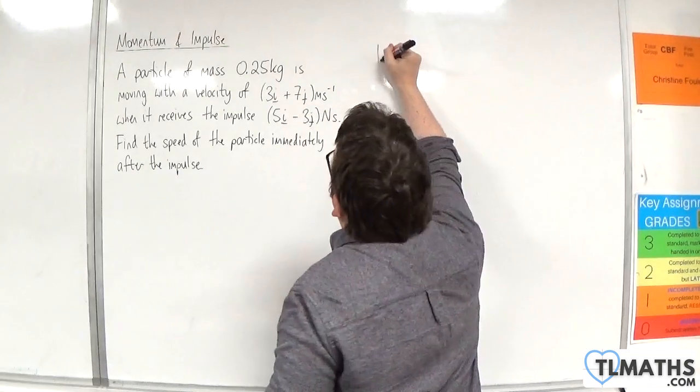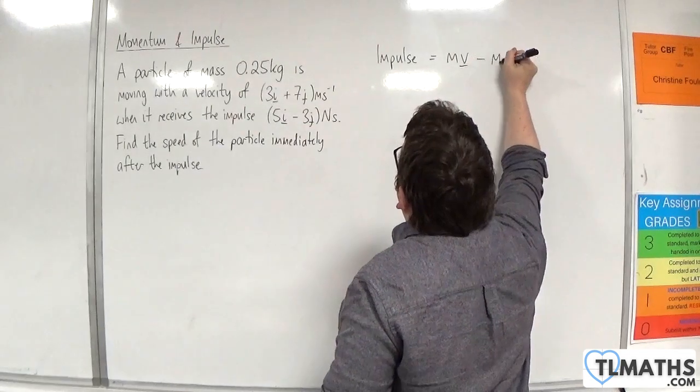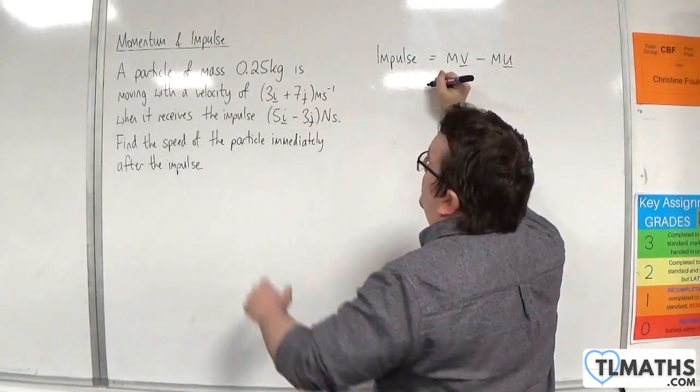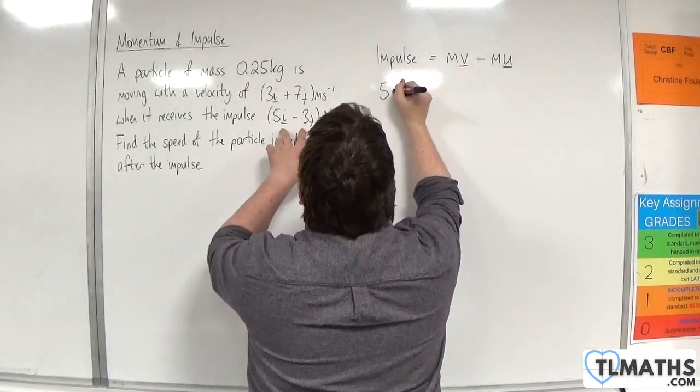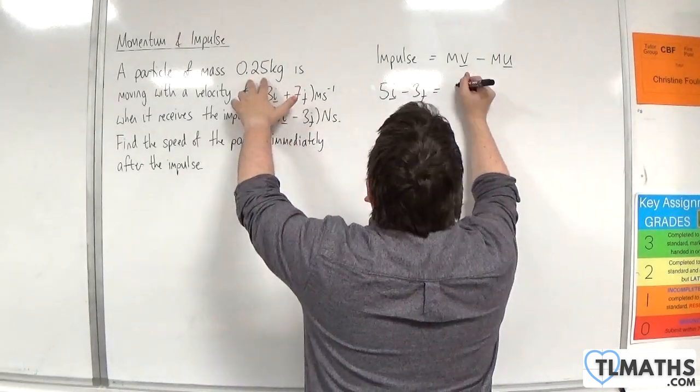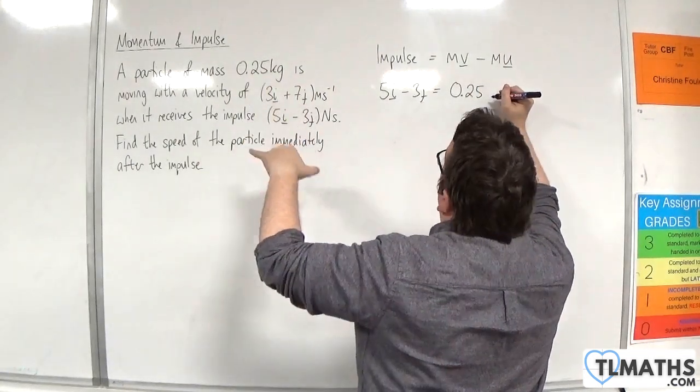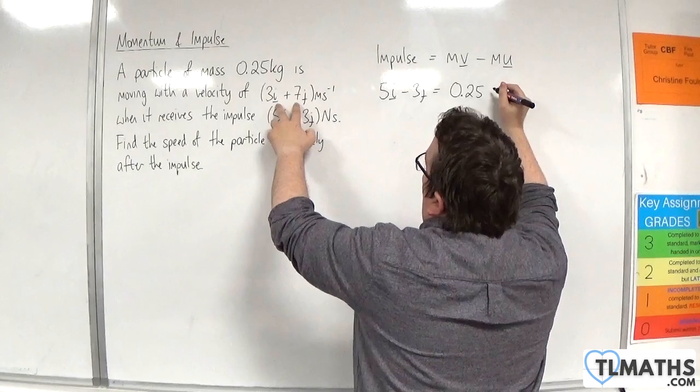We know that the impulse is the change in momentum. The impulse here is 5i - 3j. The mass is 0.25, and that's times the velocity, which is 3i + 7j.